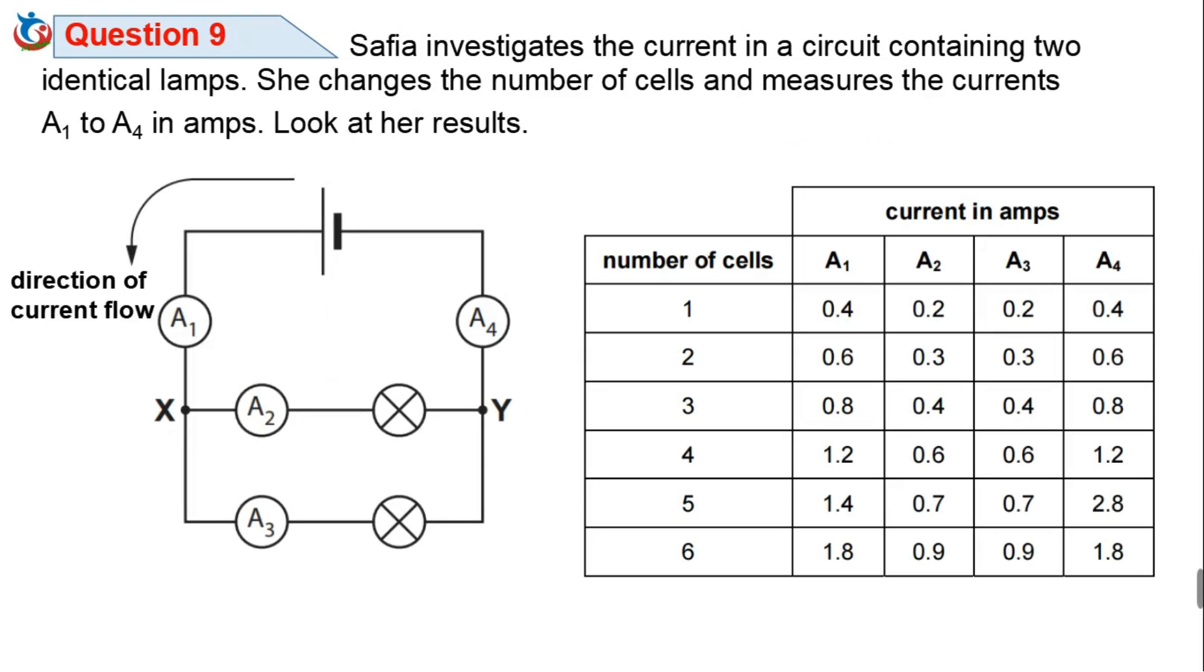Question 9. Sophia investigates the current in a circuit containing two identical lamps. She changes the number of cells and measures the current A1 to A4 in amps. Look at her results. From the electric circuit, we can see the direction of flow of electrons from the positive terminal of the cell. We could see point X and point Y also. The table shows the results of the investigation showing the amount of current measured by the ammeters A1, A2, A3 and A4, according to the number of cells from 1 to 6.